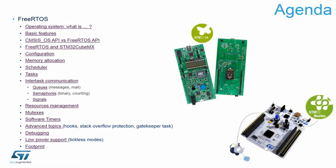Then we will discuss the main components of FreeRTOS, starting from the scheduler, then tasks, communication between tasks — touching queues, semaphores, and signals — resource management, mutexes, software timers. After covering those main components, we will focus on hooks, stack overflow protection, and other advanced topics related to FreeRTOS.